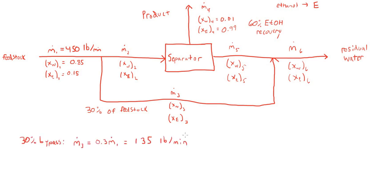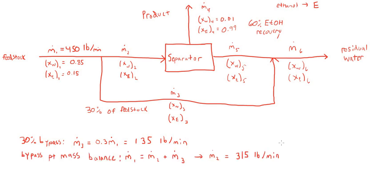M.3, the bypass stream, is 135 pounds per minute. From here, we can calculate M.2, the mass flow rate directly into the separator, by doing a mass balance on the bypass point. Doing that, M.2 is 315 pounds per minute. Another piece of information from the bypass is the composition of M.2 and M.3. When the feedstock splits and the M.3 bypass is created, it doesn't alter the chemical composition, so M.2 and M.3 have the same mass fractions as M.1.